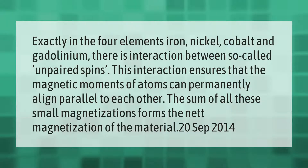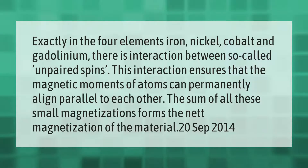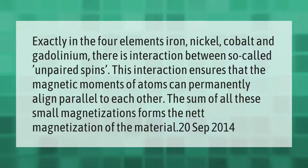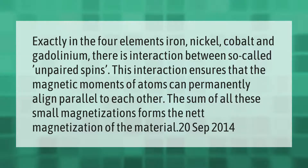In four elements — iron, nickel, cobalt, and gadolinium — there is interaction between so-called unpaired spins. This interaction ensures that the magnetic moments of atoms can permanently align parallel to each other. The sum of all these small magnetizations forms the net magnetization of the material.